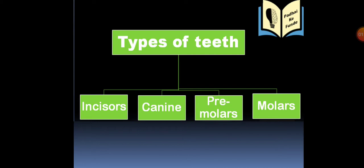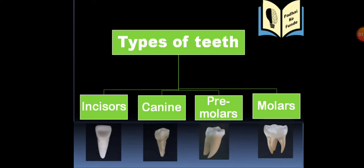So we have 32 teeth in our mouth. These are of four different types: they are incisors, canines, premolars, and molars.